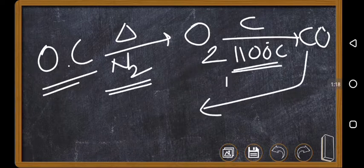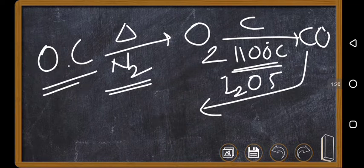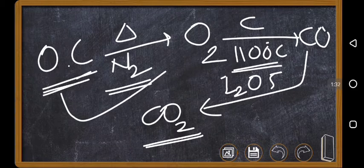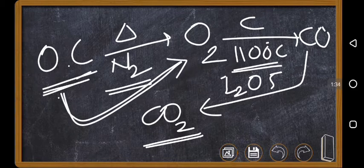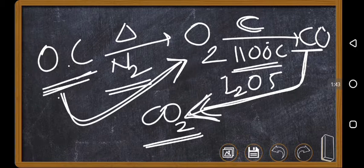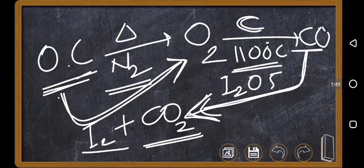This carbon monoxide is further heated with I2O5 so that it turns into carbon dioxide. The process is: organic compound is heated in the presence of nitrogen. Whatever oxygen is present in the organic compound is converted into oxygen gas, which on reaction with coke at high temperatures turns into carbon monoxide, which is further converted to carbon dioxide by using I2O5. So along with CO2, you get I2, so by the amount of iodine you can calculate the amount of oxygen.